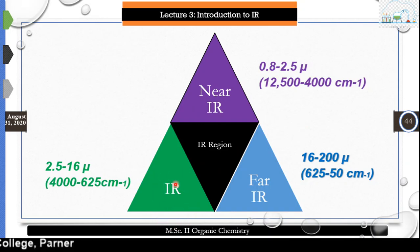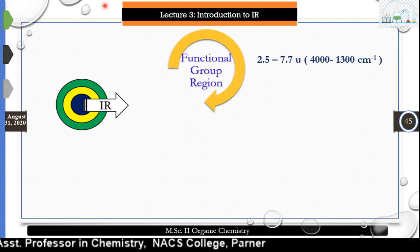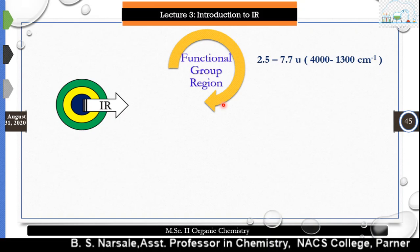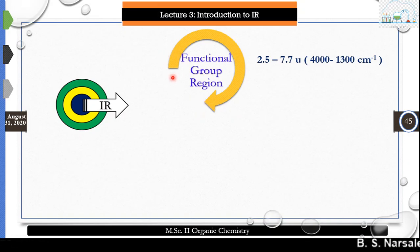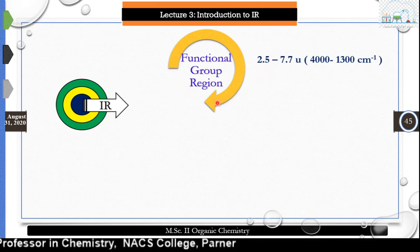Looking at the main IR region, it is divided again into three different regions. The first is the functional group region, ranging from 2.5 to 7.7 micrometers, that is 4,000 to 1,300 cm⁻¹. This is a common functional group region which shows absorption bands and is known as the functional group region. This region arises from stretching vibrations of functional groups — OH, NH, CH — in a molecule.